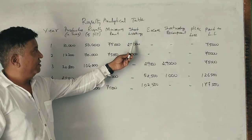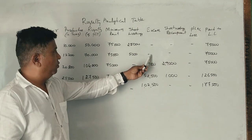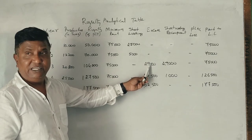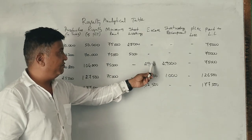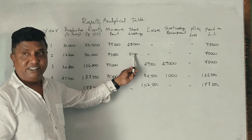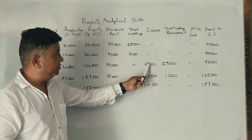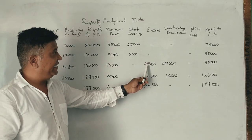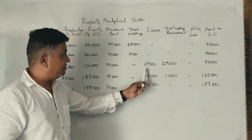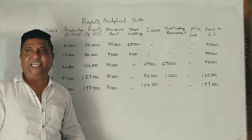If you get full recovery of short workings within the allowed period, you get 100% recovery. If not, the unrecovered short workings are lost. This is worth 6 marks or 8 marks in the exam.